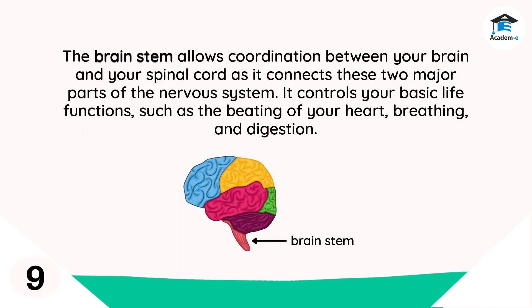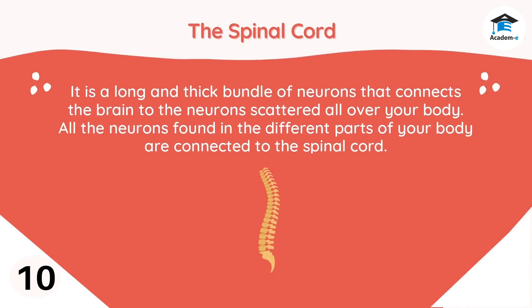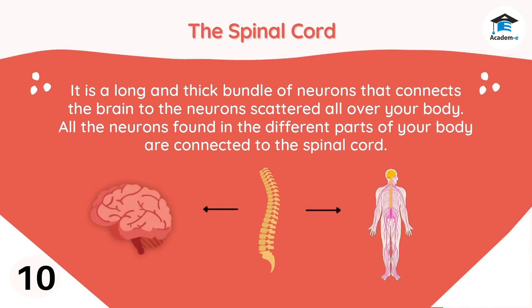The brainstem allows coordination between your brain and your spinal cord, as it connects these two major parts of the nervous system. It controls your basic life functions such as the beating of your heart, breathing, and digestion. The spinal cord is a long and thick bundle of neurons that connects the brain to the neurons scattered all over your body.